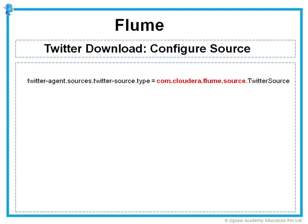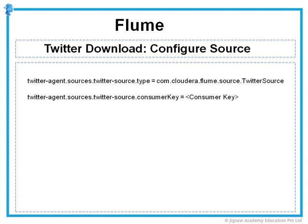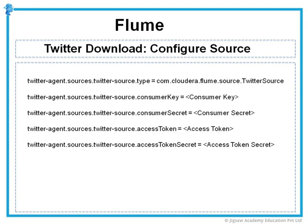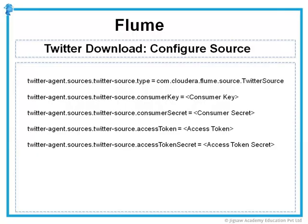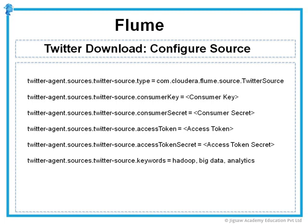Next, in order to connect to Twitter, we need to use certain keys from your account. You need the consumer key, which is the API key on the applications page. Then you need the consumer secret, which is the same as the API secret. And then you need the access token and the access token secret — all of which are on the page of our sample application. You would also need the keywords based on which you want to extract the tweets. Here we have configured to extract tweets containing the keywords Hadoop, Big Data, and Analytics. You can have any number of keywords but they need to be comma separated.